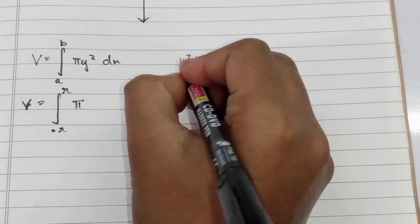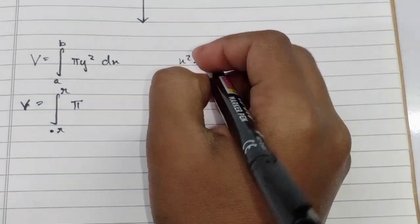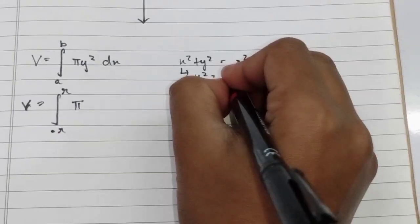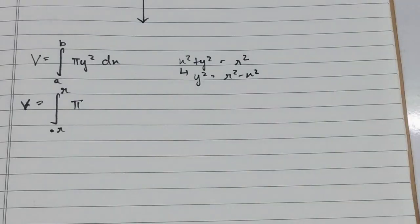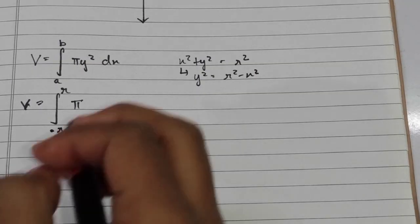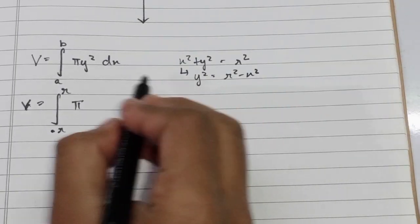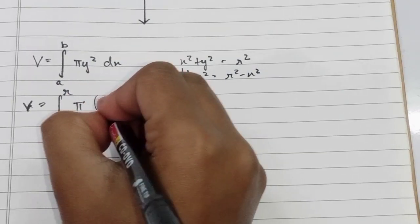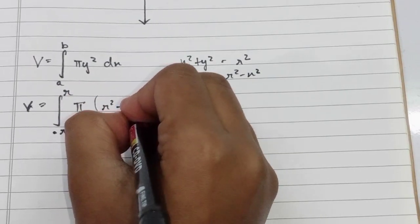If we move x² to the left-hand side, we get y² = r² − x². So π times y² becomes π times (r² − x²).